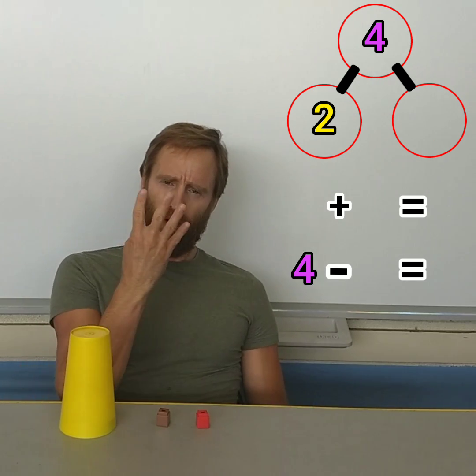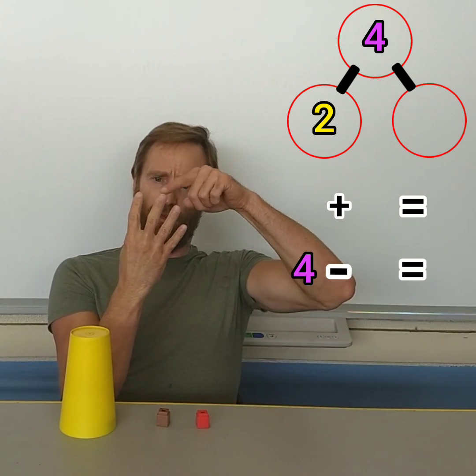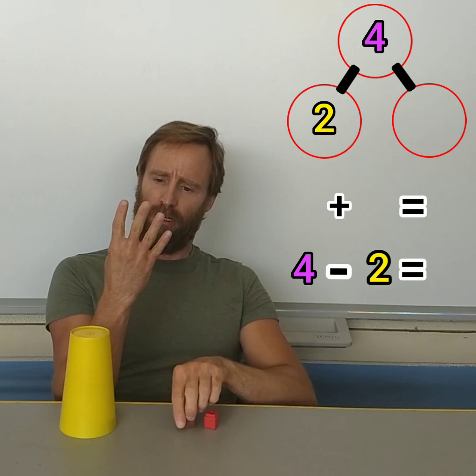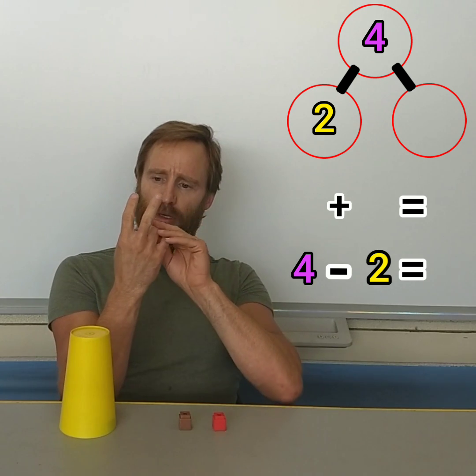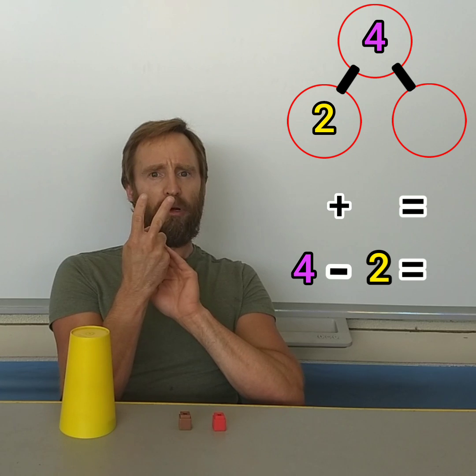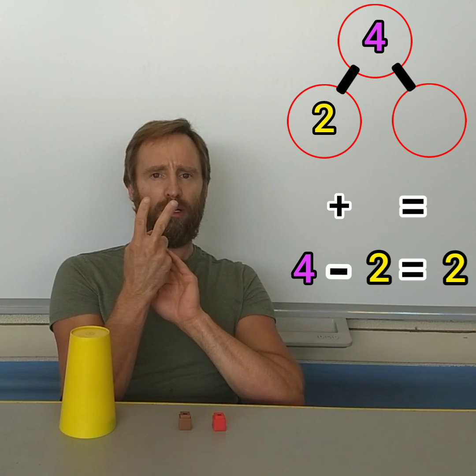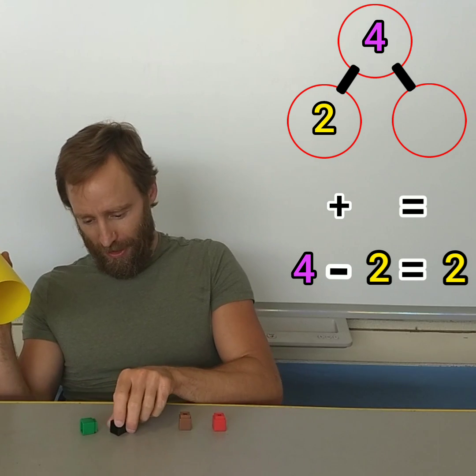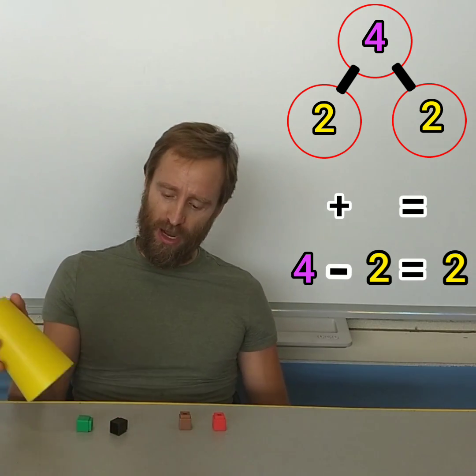If there was four cubes, one, two, three, four. But now I only see two. One, two. There must be two under the cup. Let's look. Cha-ching! Look at that. One, two. Just like we thought.